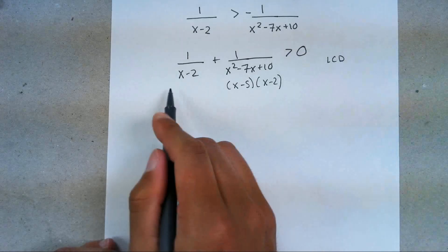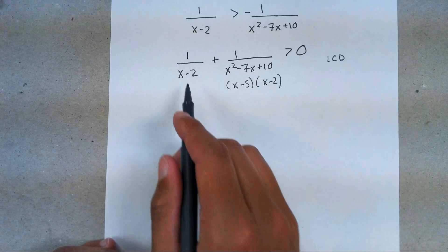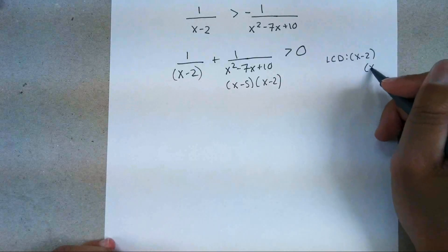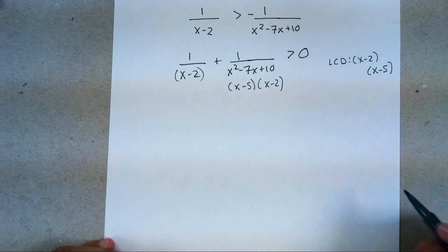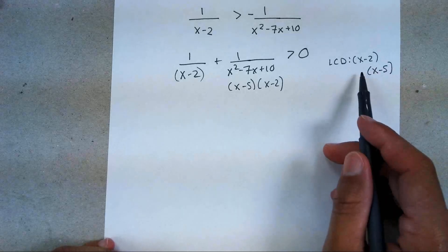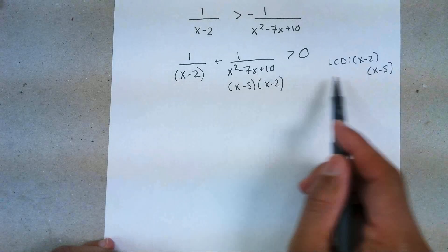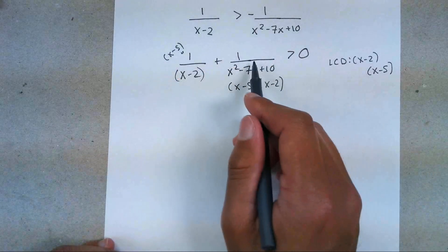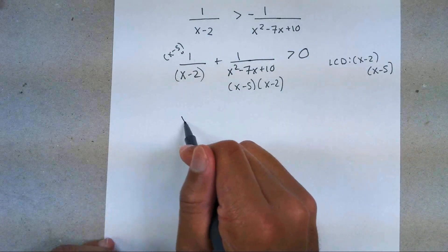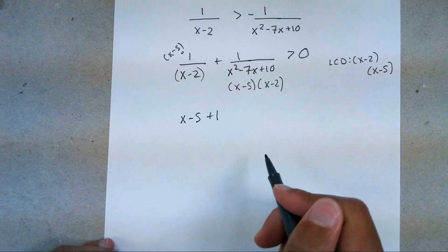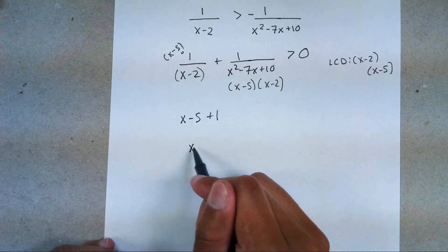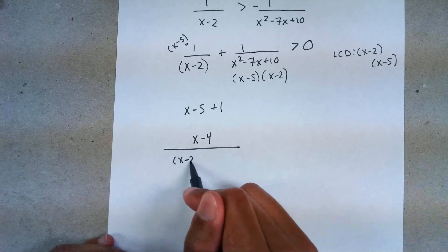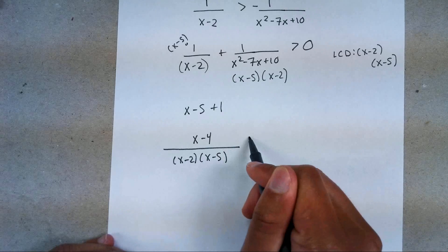Find the LCD: the denominators have (x − 2) and (x − 5), so the LCD is (x − 2)(x − 5). Multiply whatever each fraction is missing: the first fraction is missing (x − 5), so multiply the top by (x − 5). The second fraction already has the full LCD. That gives (x − 5) + 1 = x − 4 in the numerator. Simplified, you get (x − 4) over (x − 2)(x − 5), greater than zero.